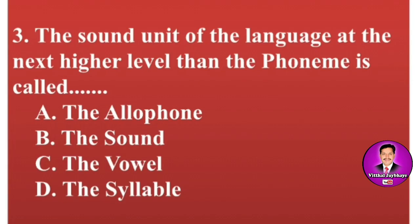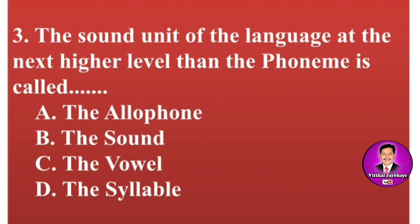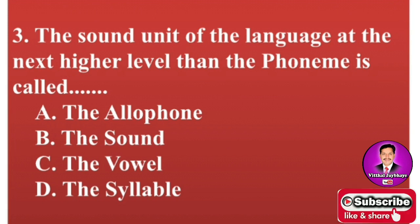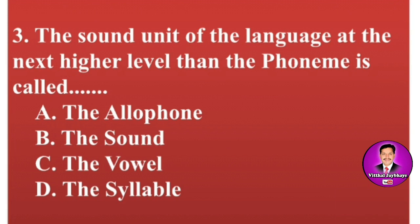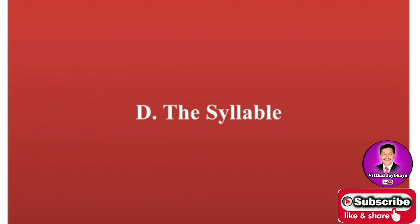Next MCQ: The sound unit of the language at the next higher level than the phoneme is called dash-dash-dash. Options are A: the allophone, B: the sound, C: the vowel, D: the syllable. Note down your answer. The correct answer is D — the syllable.